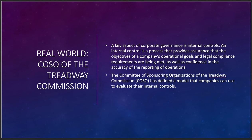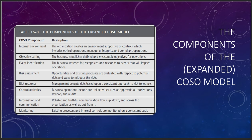The COSO model — Committee of Sponsoring Organizations of the Treadway Commission — basically sets down the components of internal controls and how that model works. In the internal environment, the organization creates an environment supportive of controls, including ethical operations, managerial technology, and compliant operations — everyone working together to make both technical and procedural controls work. Objective setting: the business establishes defined and measurable objectives for operations — KPIs, like ensuring bandwidth never exceeds a threshold or using a QoS setting for VoIP so you never drop a call.